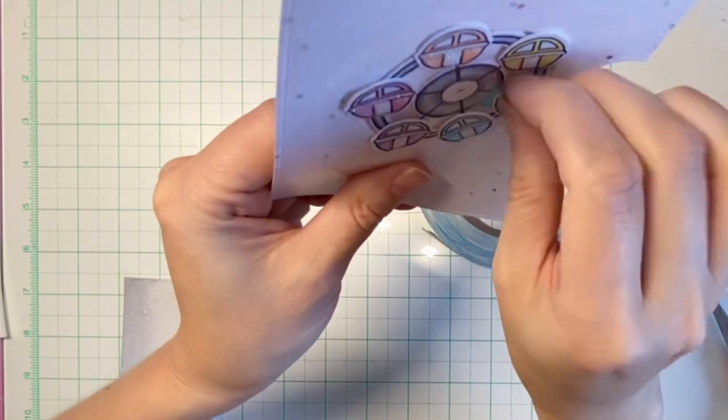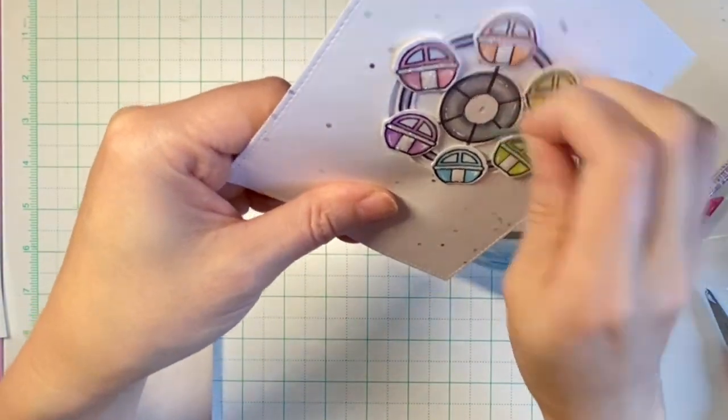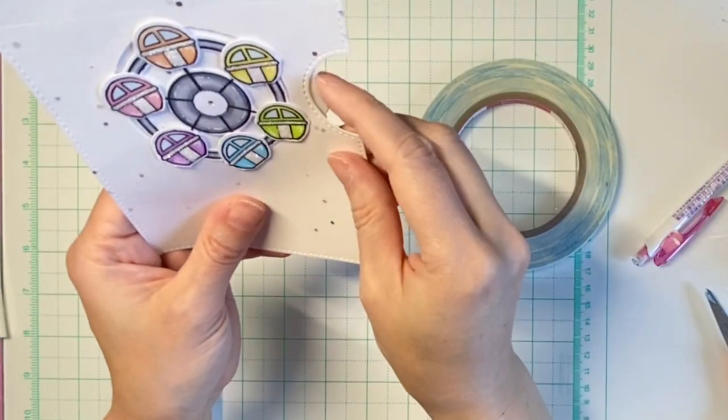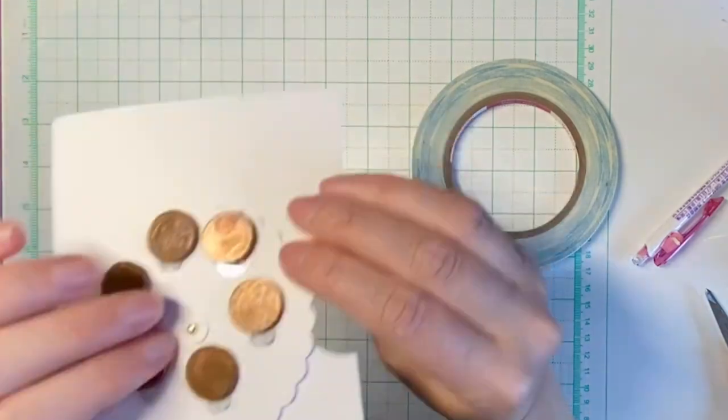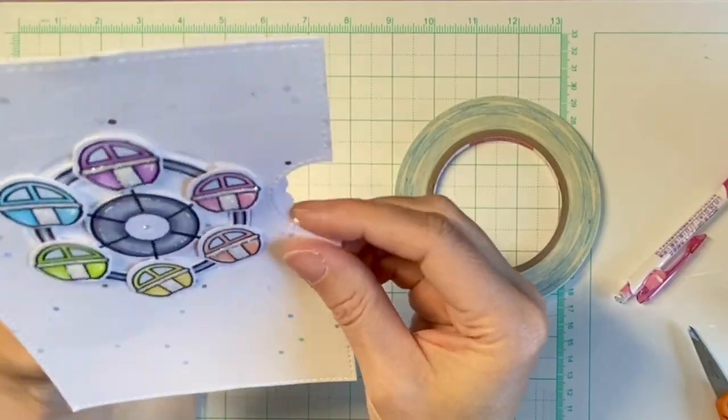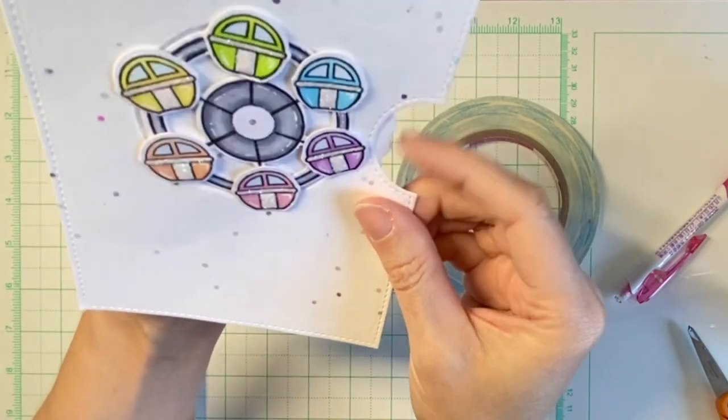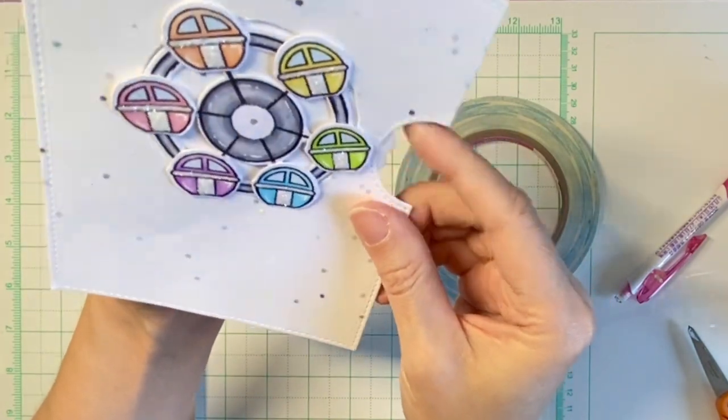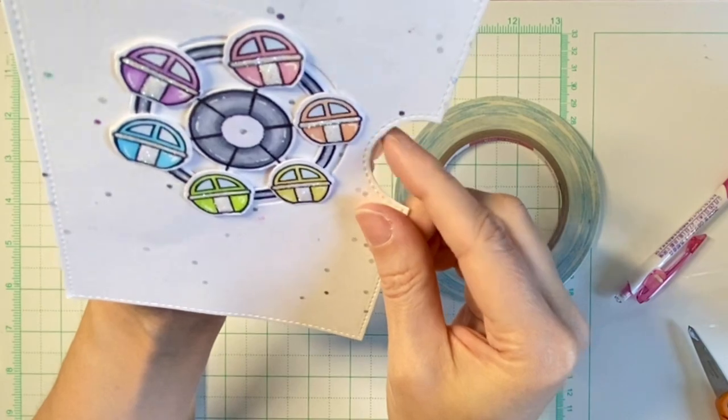And after that's done, I removed all the low tack tape and checked if my mechanism works. And it does. You can see you can spin the wheel and the gondolas will keep the orientation.